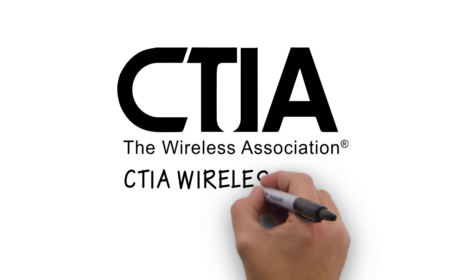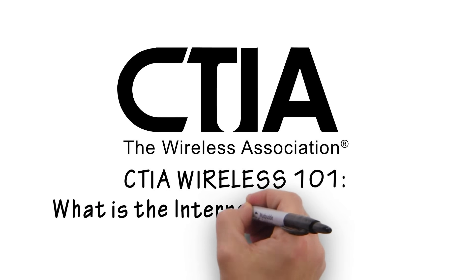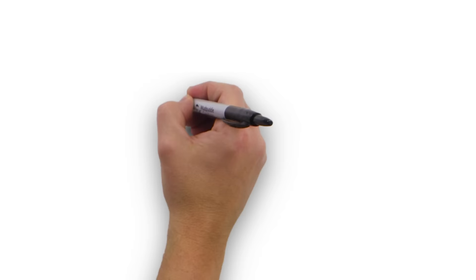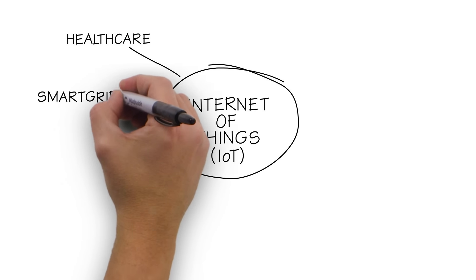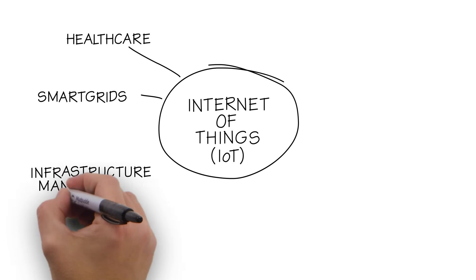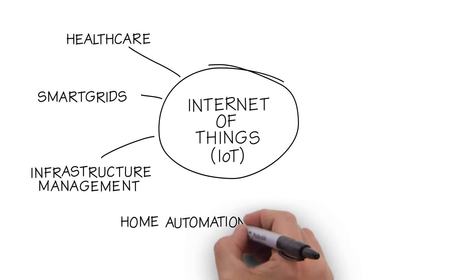CTIA explains the Internet of Things in this short Wireless 101 video. The Internet of Things are network-connected objects, systems, and devices that are monitored or controlled via the Internet.